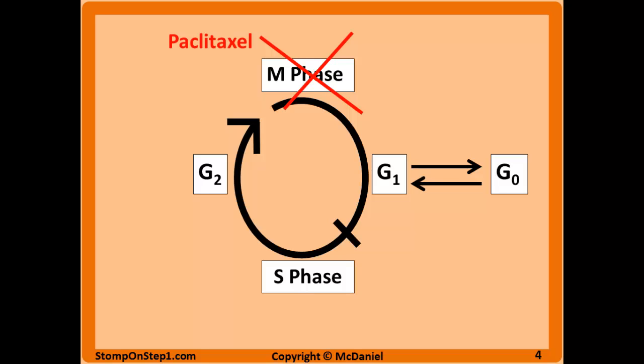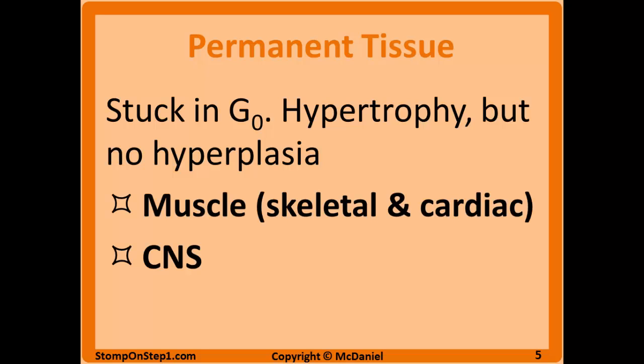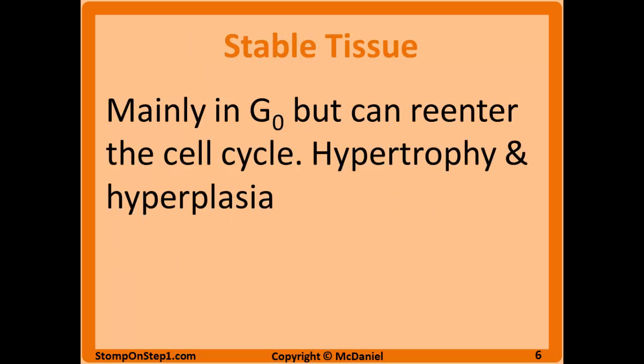Permanent tissue is stuck in the G0 phase — the lazy phase. These cells can get bigger, or hypertrophy, but they do not undergo hyperplasia; in other words, they don't divide. As discussed earlier, muscle does not divide, nor does CNS tissue. Stable tissue is waiting to be recruited — it mostly stays in the G0 phase, but it can re-enter the cell cycle when needed. These cells get bigger via hypertrophy and they divide via hyperplasia.